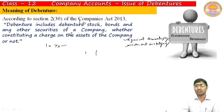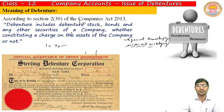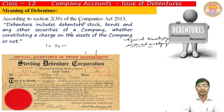When assets are not used as security, that means no mortgage is involved. Now let's look at a debenture certificate. This is the debenture certificate, which contains all details related to the interest rate, name of the holder, and so on.